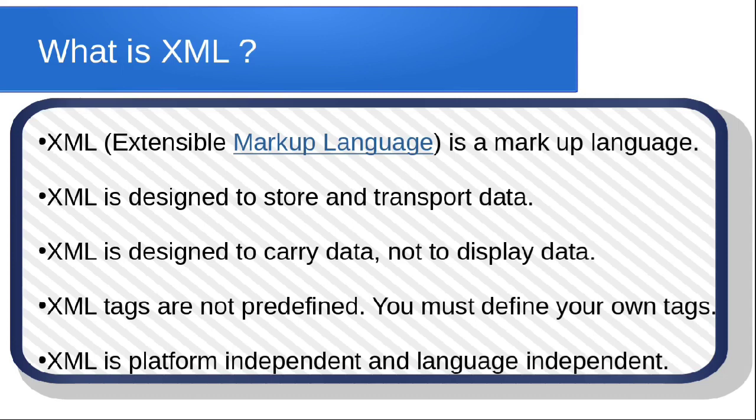XML is designed to store and transport data — you will understand this point after seeing the implementation. XML is designed to carry data, not to display data; HTML is used to display data. XML tags are not predefined, meaning you need to define all your own tags. XML is also platform independent — you can use it on any operating system and with any language.